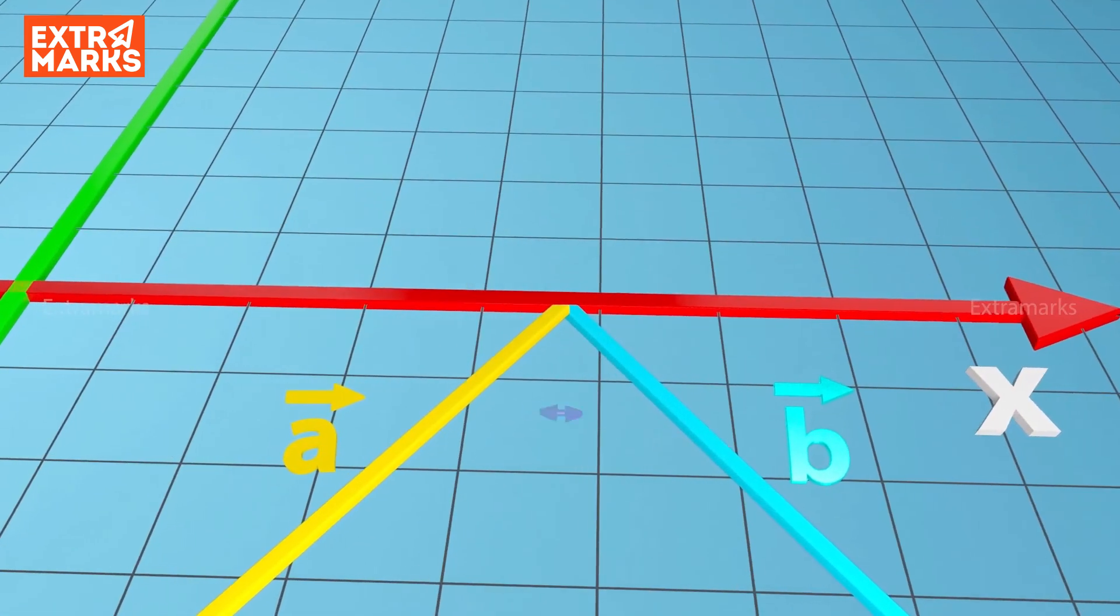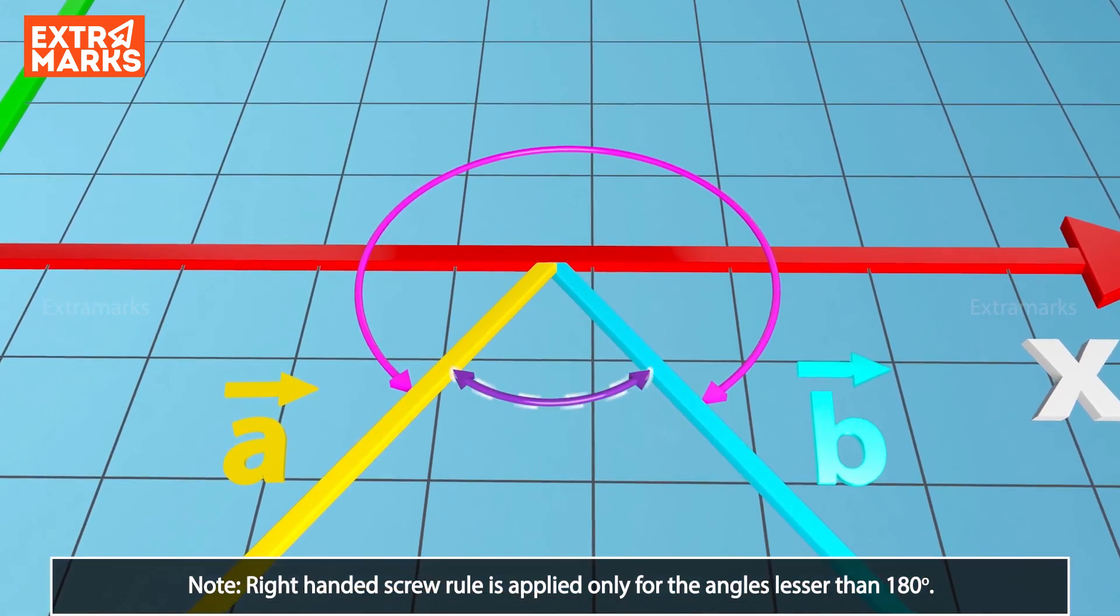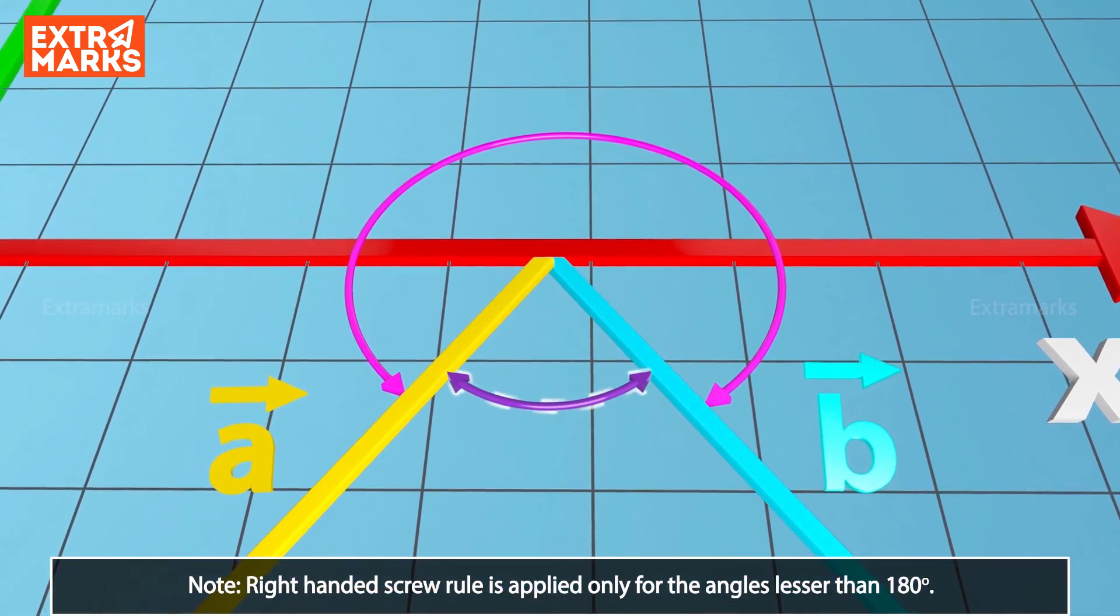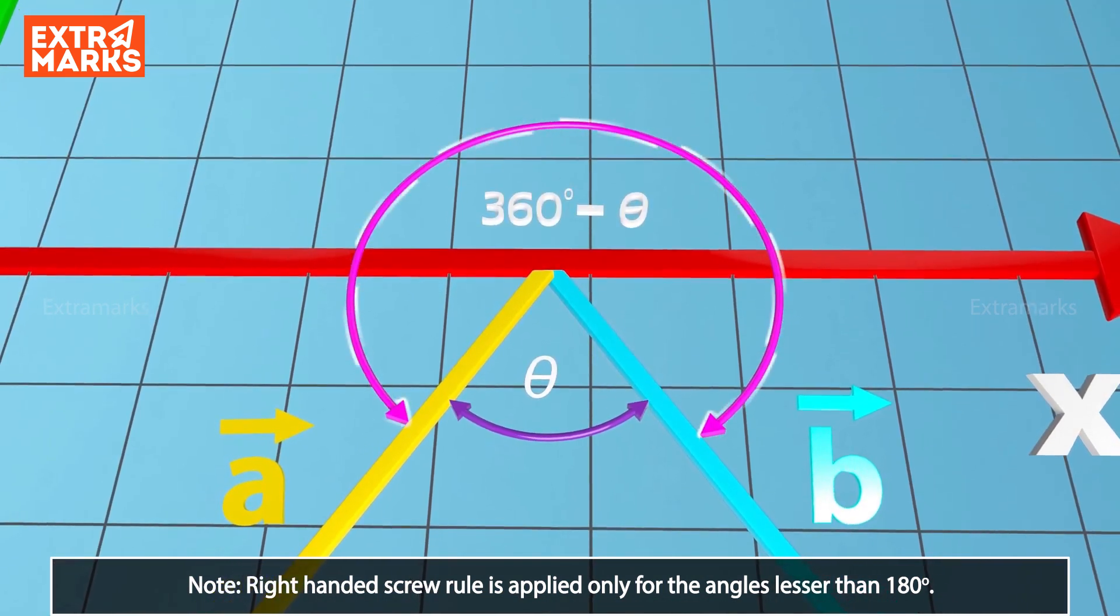There are two angles between vector A and B. The smaller angle or the angle lesser than 180 degrees, say theta, and the larger angle, 360 degrees minus theta.